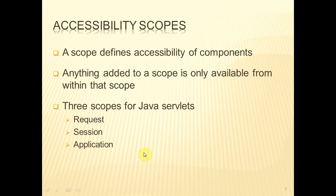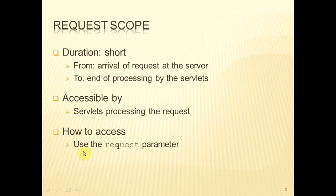With Java servlets we've got three types of scope: request, session, and application. The request scope typically is of a very short duration, because it starts when the request from the client arrives at the server, and it will end when the servlets have finished processing that request — typically lasting just a few milliseconds. Only servlets that are processing that request can access it.